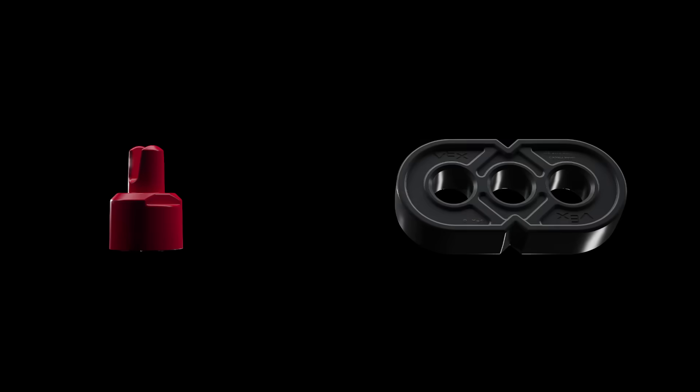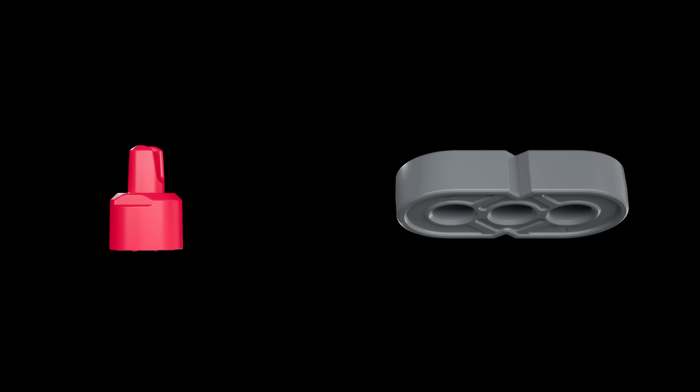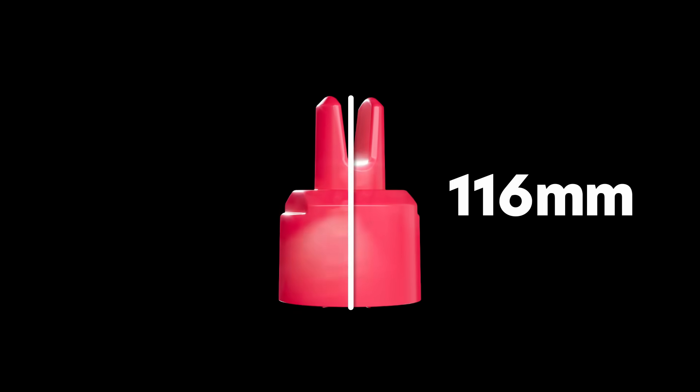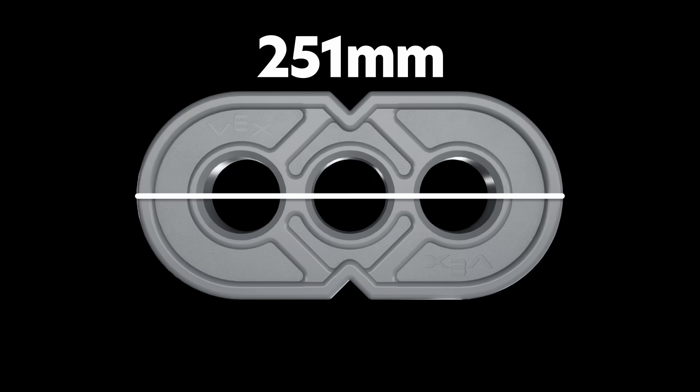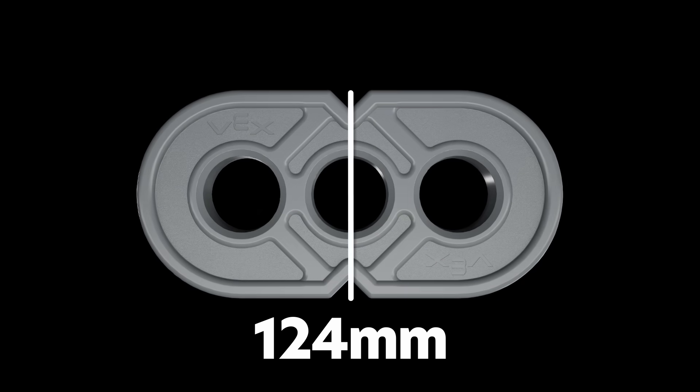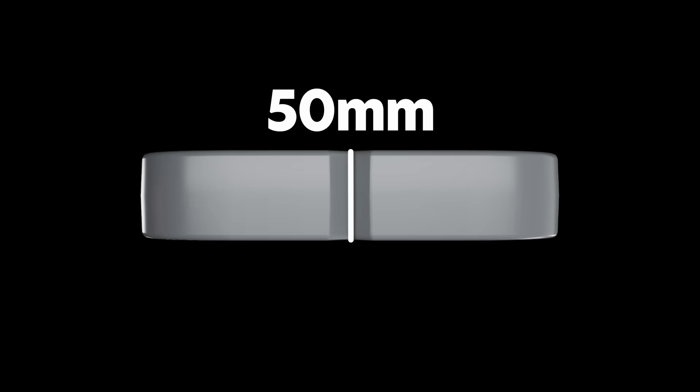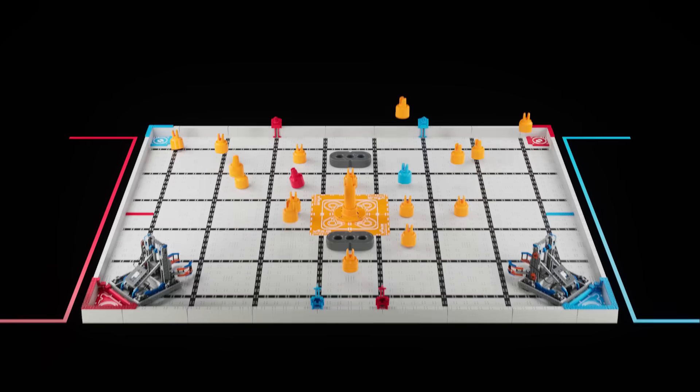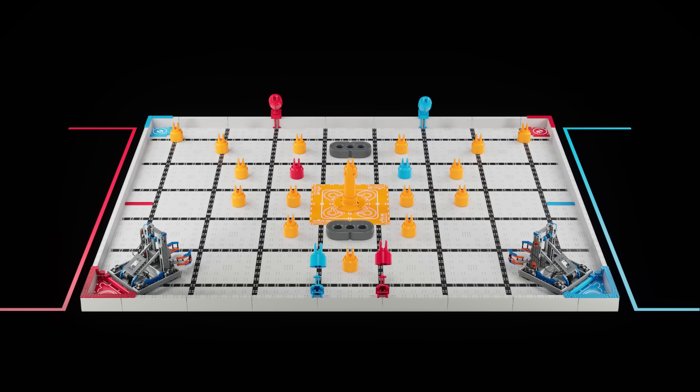There are two types of game objects: pins and beams. Pins are 116 millimeters tall and 80 millimeters in diameter. Beams are 251 millimeters long by 124 millimeters wide by 50 millimeters tall. 18 pins and two beams start on the field with four additional pins on starting posts.